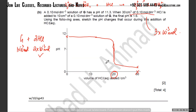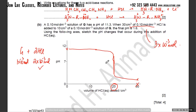I'll briefly discuss that in the next class. Double acid-base reactions are no longer really in your course — this is an old question, so this level of detail should be sufficient. The extra 10 cm³ of HCl made the solution acidic, giving a final pH of 1.6. For two marks, you just had to find the equivalence point — at what point the base got completely neutralized.